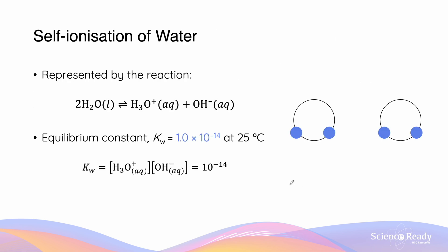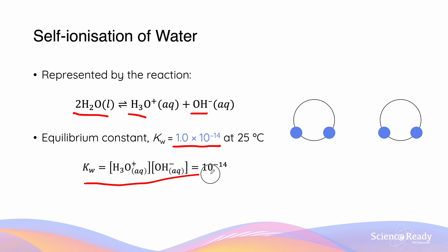The self-ionization of water: water is an amphiprotic substance and self-ionizes. The reaction is 2H₂O forming H₃O+ and OH−, with one water acting as an acid and one as a base. The equilibrium constant Kw equals 1 × 10⁻¹⁴ at 25°C, meaning the H+ concentration times the OH− concentration always equals 1 × 10⁻¹⁴.